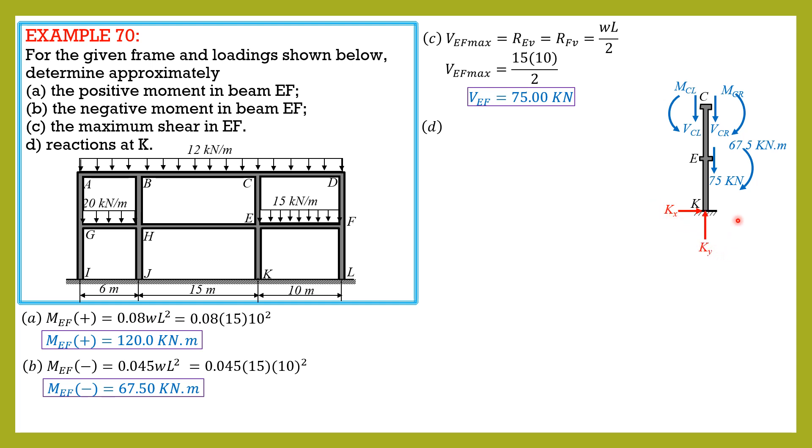And then that's KX, KY, and moment which is X. Let's assume it is counterclockwise, MK. So KY is summation forces Y. KX is 0, by the way, for part D. Then VCR is W, which is 12 times 10 over 2, RsubC, so 60 kilonewtons. VCL is 12 times 15 over 2, so it is equal to 90 kilonewtons. So finally we can solve KY: summation forces Y equals 75 plus 60 plus 90, so KY is equal to 225 kilonewtons upward.